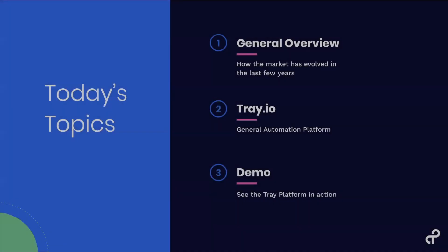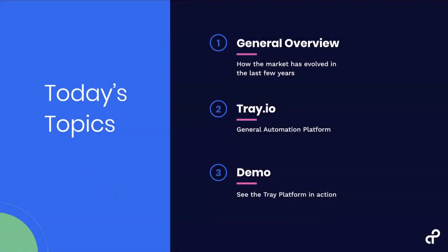In terms of a high-level agenda: I'm going to run through a few slides giving you a little background on the space we're in and what Tray is doing differently, along with some background on us as a company. Then we're going to spend time in a demo, going through a high-level demo of the platform with a focus on some e-commerce use cases today.